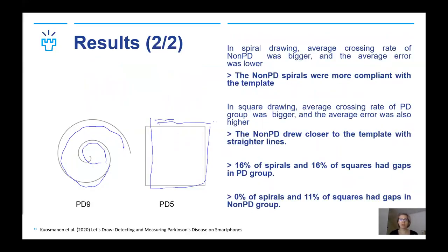In spiral drawing, the average crossing rate of the group without Parkinson's was bigger and the average error was lower, meaning non-PD spirals were more compliant with the template. In square drawing, the average crossing rate of the Parkinson's group was bigger and the average error was also higher, so the non-PD drew closer to the template with straighter lines. Additionally, 16% of spirals and 16% of squares had gaps in the group with Parkinson's.